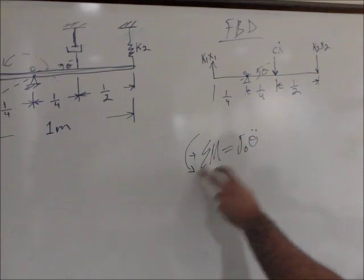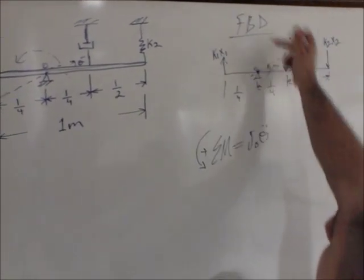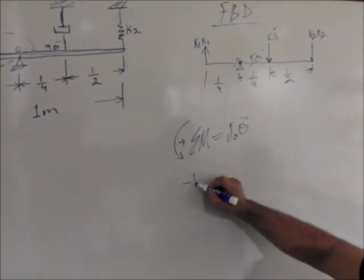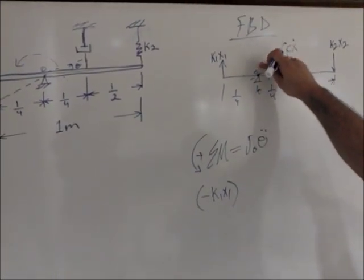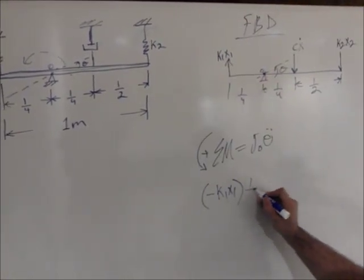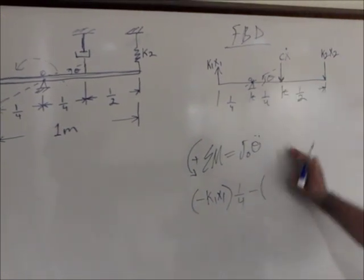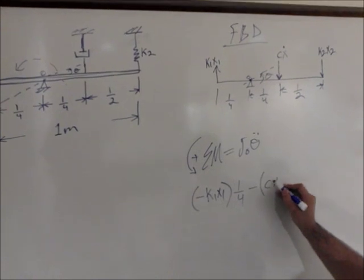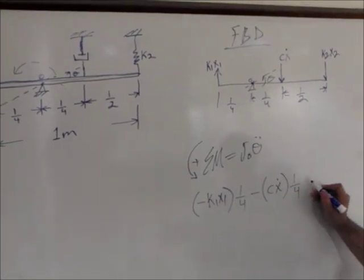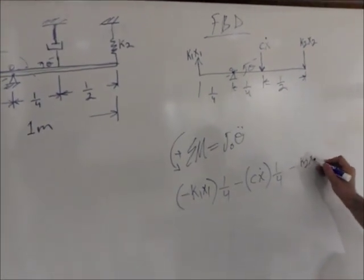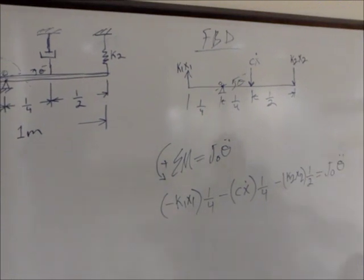Taking moments — the force k1·X1 opposes the counterclockwise direction, so it's negative: minus k1·X1 times the distance from pin O, which is one-fourth. Then minus C·X-dot times one-fourth, since the damper also opposes. Then minus k2·X2 times the distance, which is one-half. This equals the moment of inertia times theta-double-dot.